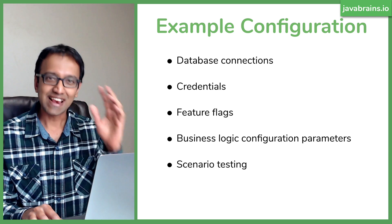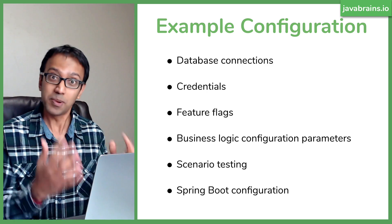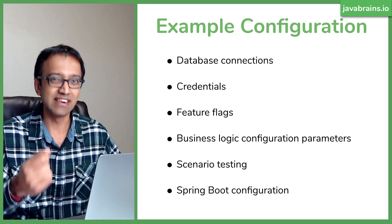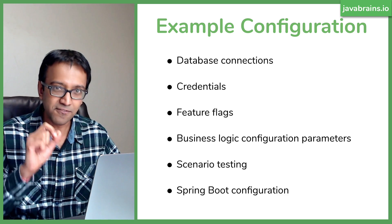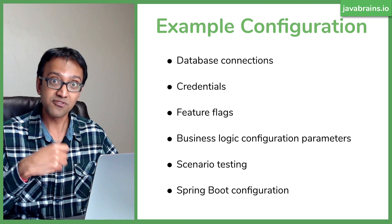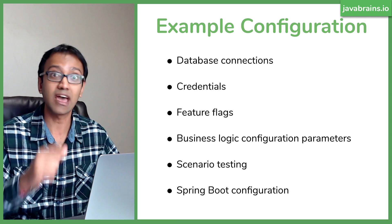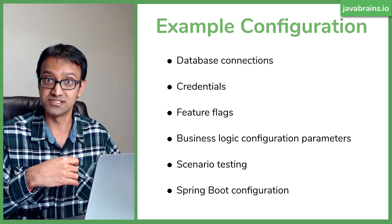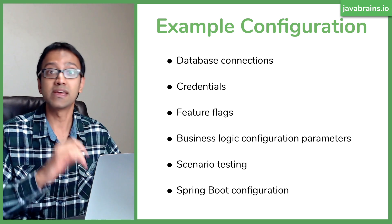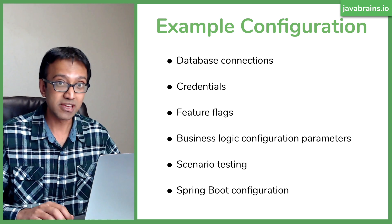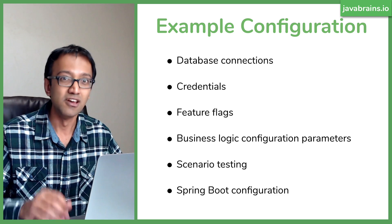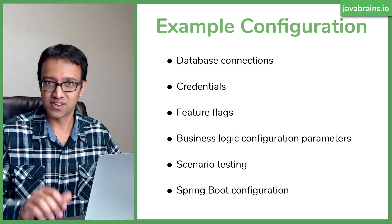The most classic case for configuration is Spring Boot configuration itself. Spring Boot has many dials, levers, and switches that control framework behavior. In level two, we looked at fault tolerance and resilience — there were many configuration parameters for things like Hystrix, connection timeouts, number of concurrent connections, and error handling. You want those to be configurable without requiring a new deployment.